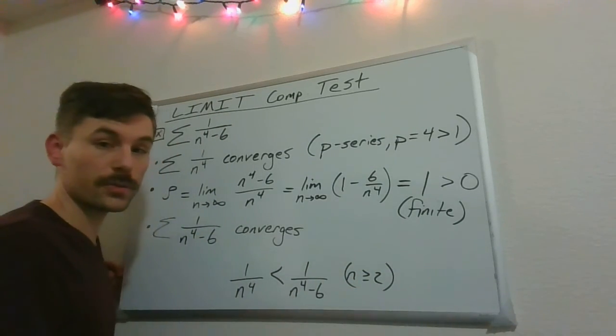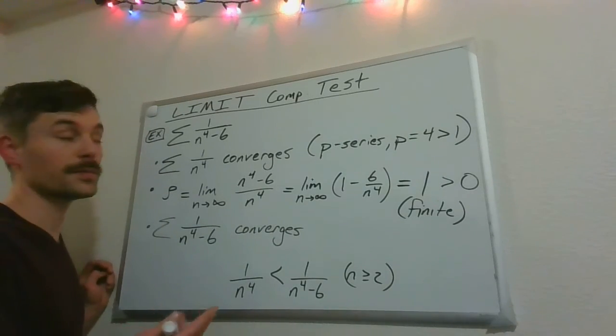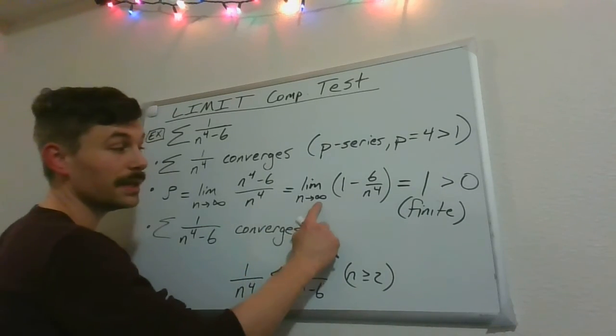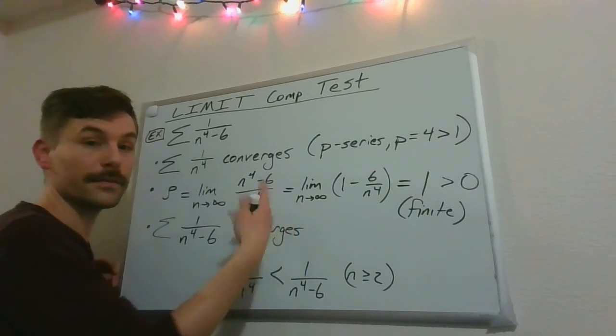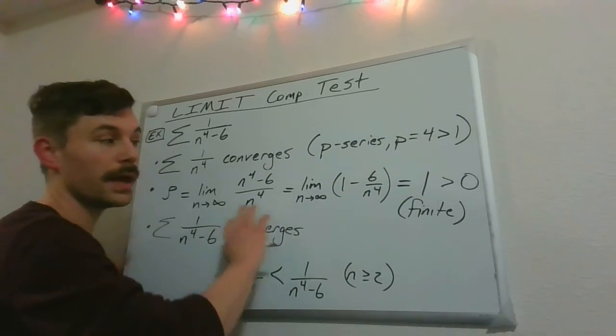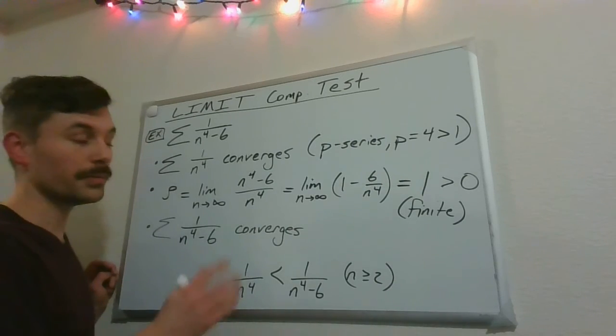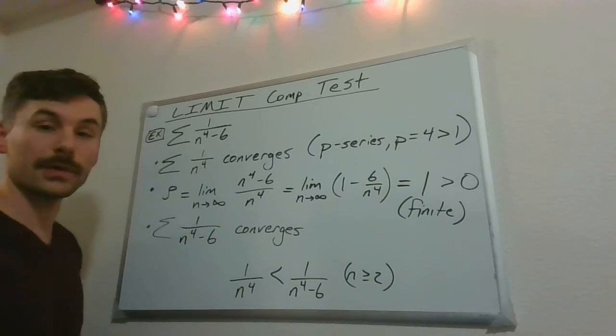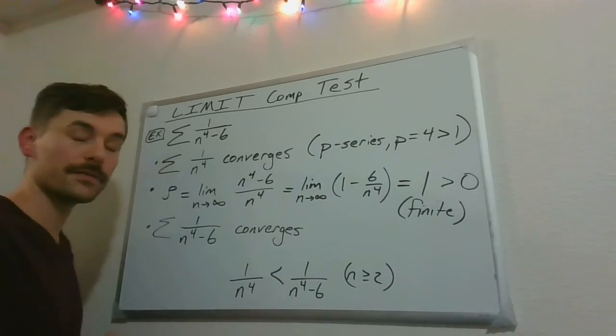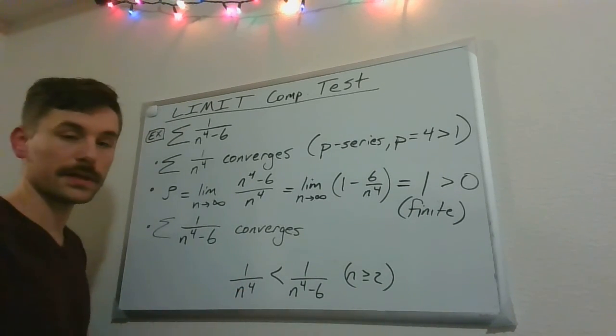That would have been a problem we would have to sort out for the comparison test. But because the limit comparison test is saying, I don't really care about those early values for n, then this really isn't a problem. But it is something worth pointing out, worth noting that if I was going to try to use a comparison test, I do have to be mindful of situations like that.